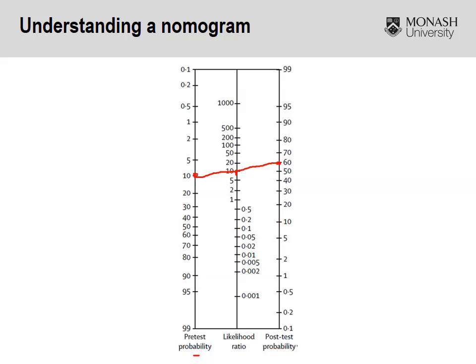That demonstrates the value of a high positive likelihood ratio in ruling in a disease. Similarly, taking the same example of 10% pre-test probability — say a disease prevalence in Australia of 10% — and a negative likelihood ratio of 0.05, drawing a straight line shows that this hypothetical test with a positive likelihood ratio of 10 is strong at ruling in the disease. Because the negative likelihood ratio approaches zero at 0.05, the post-test probability drops to 0.5% — down from 10%. So it's a good test for both ruling in and ruling out a particular disease.